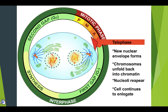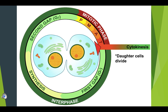In telophase, two sets of daughter chromosomes reach the opposite poles. Spindle fibers disappear, chromatids thin out in the form of chromatin fibers, and the nuclear membrane is reformed. The cleavage furrow starts deepening in the animal cell and the nucleolus reappears. In cytokinesis, the cleavage furrow deepens completely in the animal cell and separates the two daughter cells.